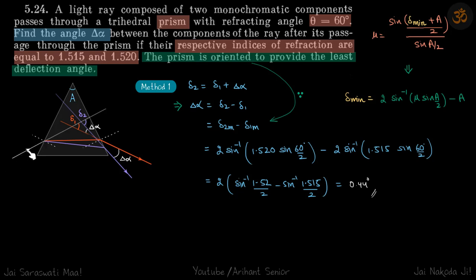A light ray passes through the prism, and this light ray consists of two monochromatic components, basically two rays of different wavelengths. Now we know when the wavelength is different, the mu for each of the rays is different. So if that mu is different, then the deflection will also be different.